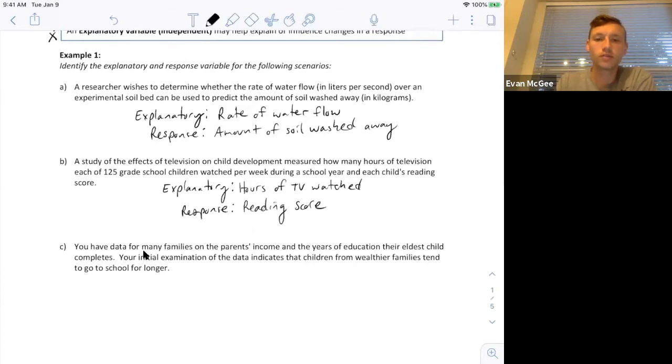Finally, you have data from many families on their parents' income and the years of education their eldest child completes. Your initial examination of the data indicates that children from wealthier families tend to go to school longer. So in this case, they're predicting how long the children go to school based on the parents' income.